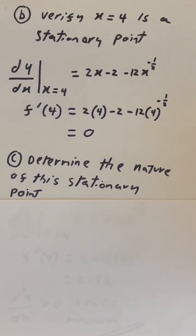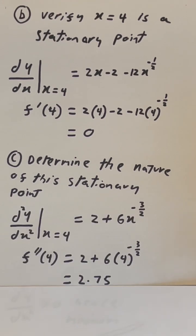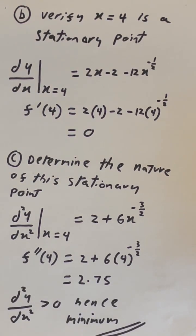Going back to part C, let's put our point, x equals 4, into the second derivative. When we put it in, we get the second derivative to be equal to 2.75. This is greater than 0, hence a minimum.